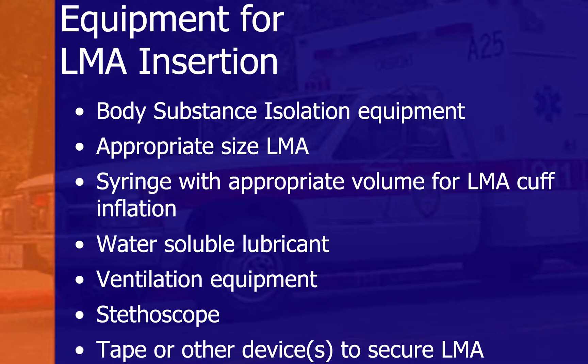Equipment used for LMA insertion includes: body substance isolation equipment, the appropriate LMA size, a syringe with the appropriate volume of air, water-soluble lubricant (2%), ventilation equipment such as a bag-mask, Ambu bag, or anesthesia machine circuit, and a stethoscope for confirmation. Tape is also needed to properly secure the LMA.